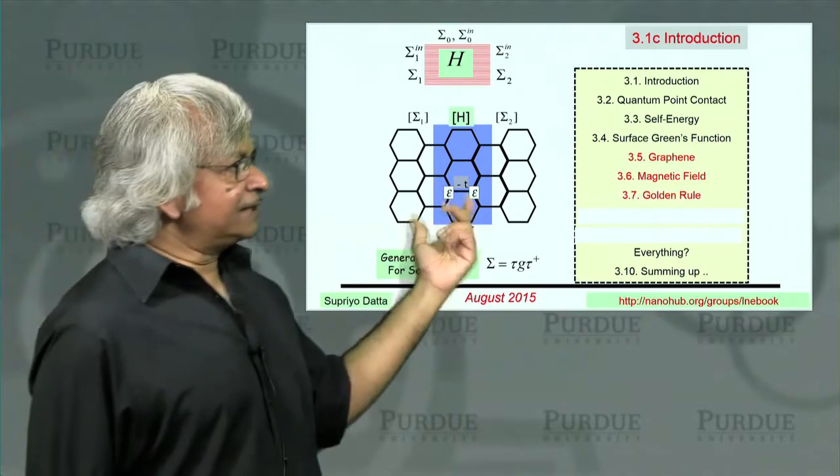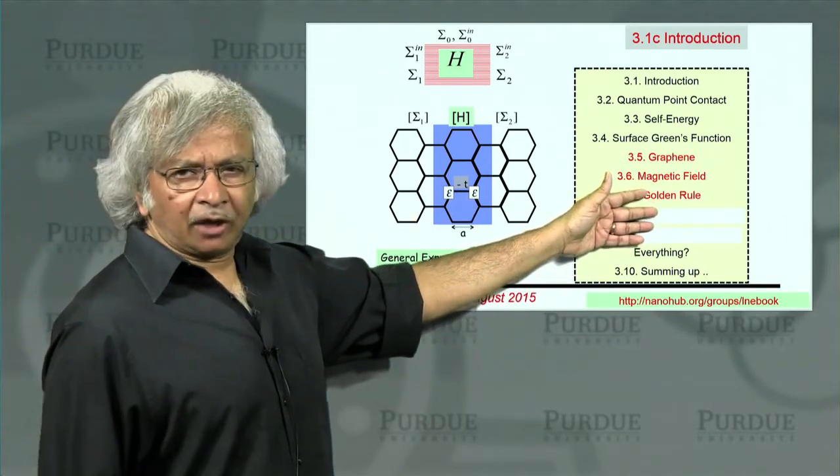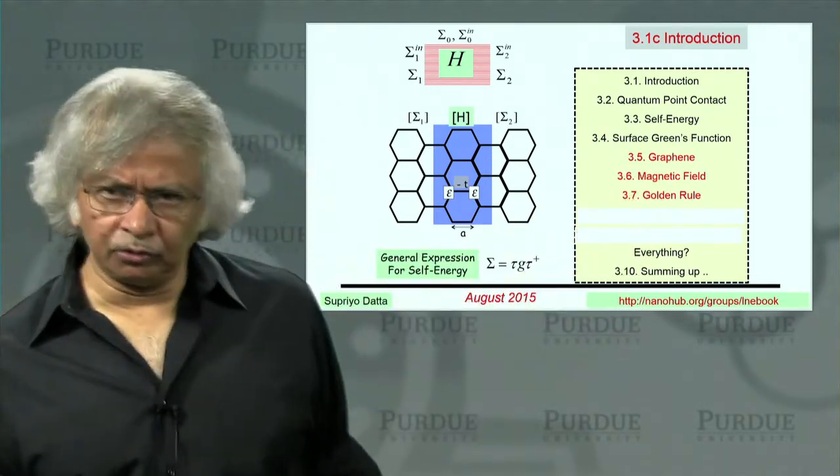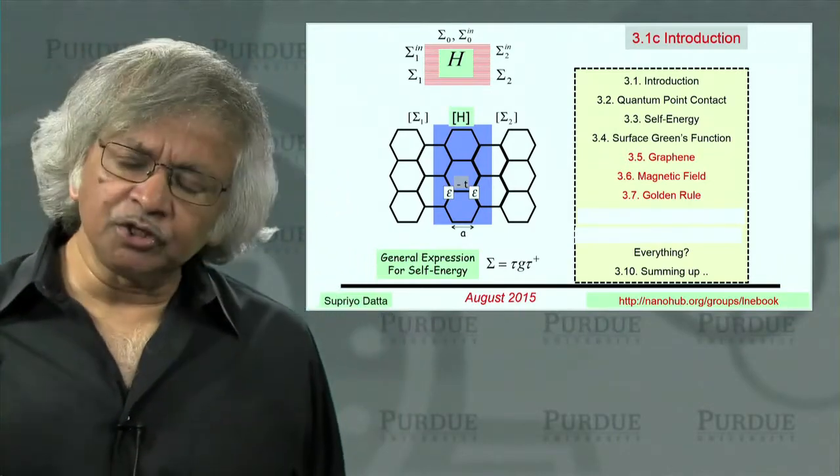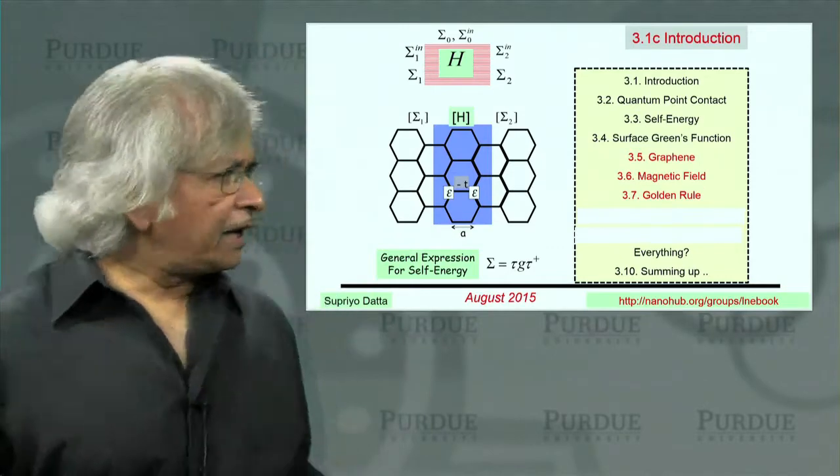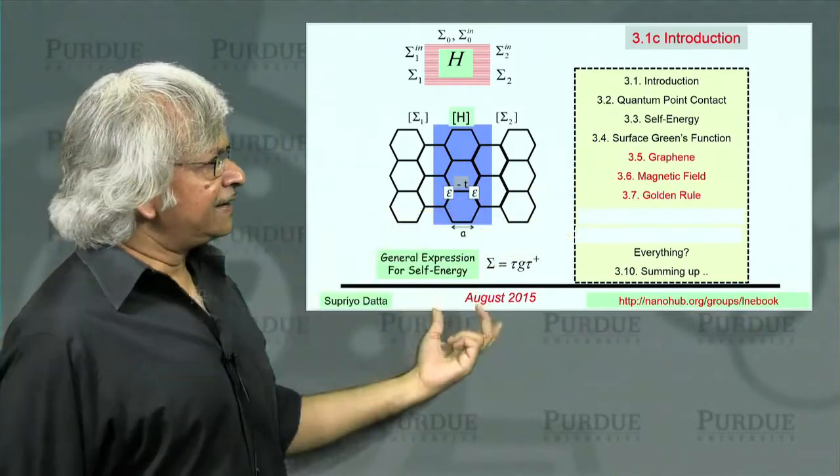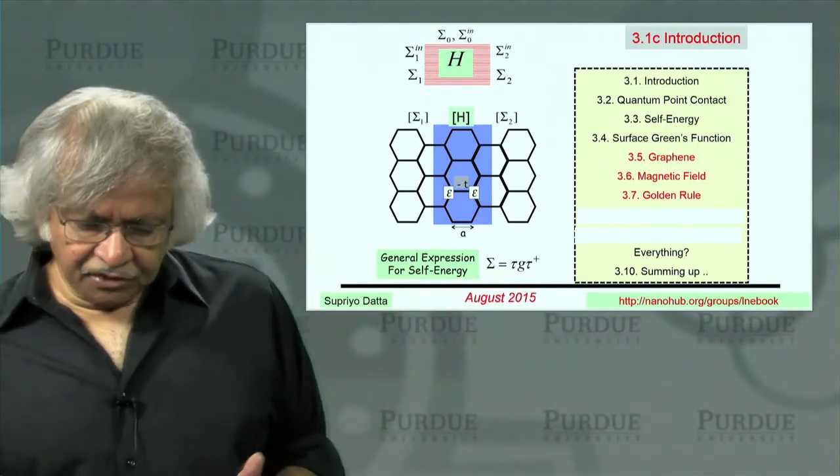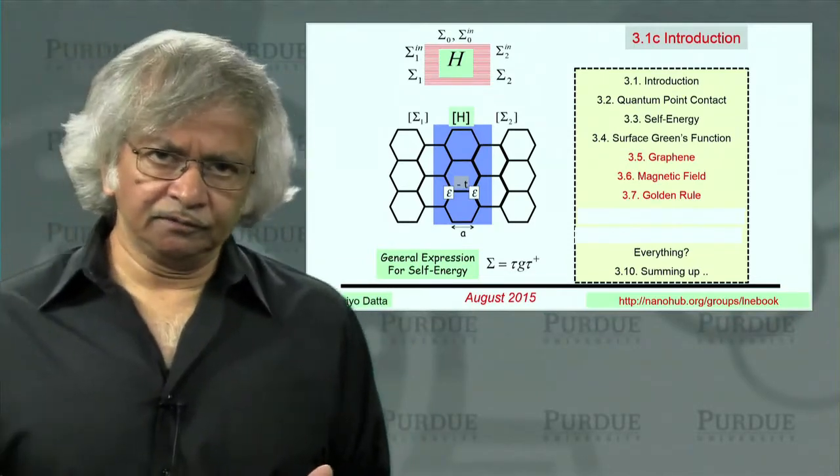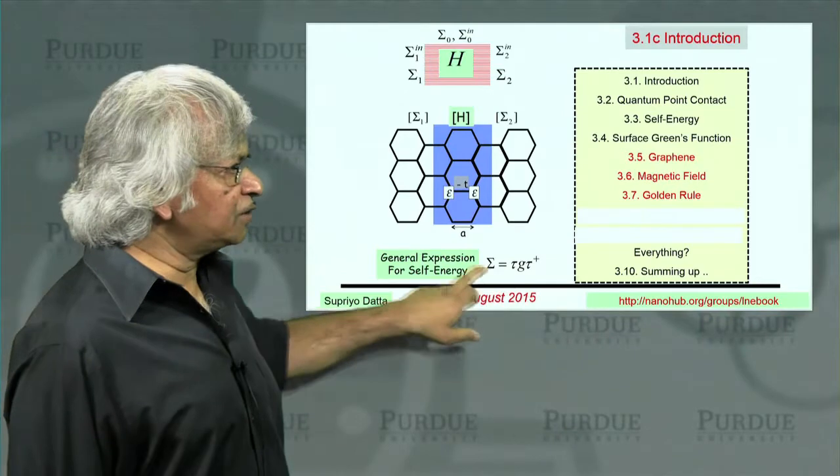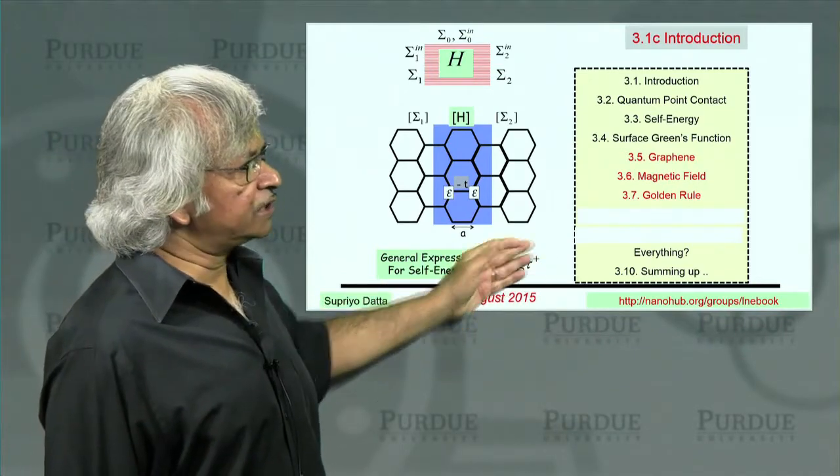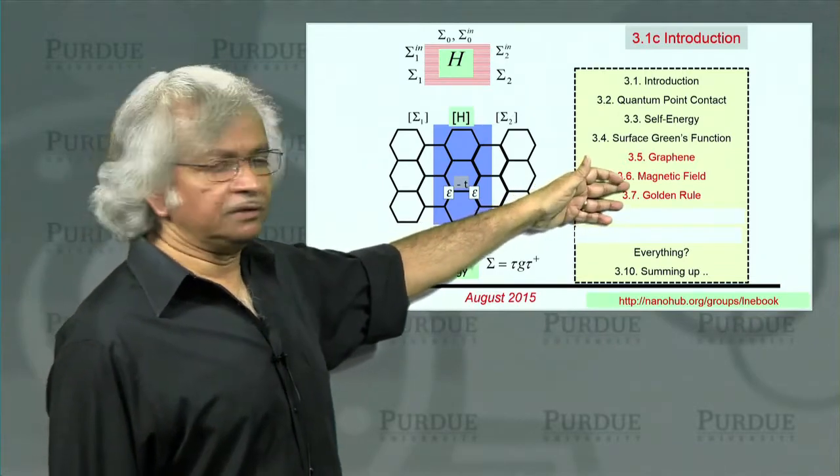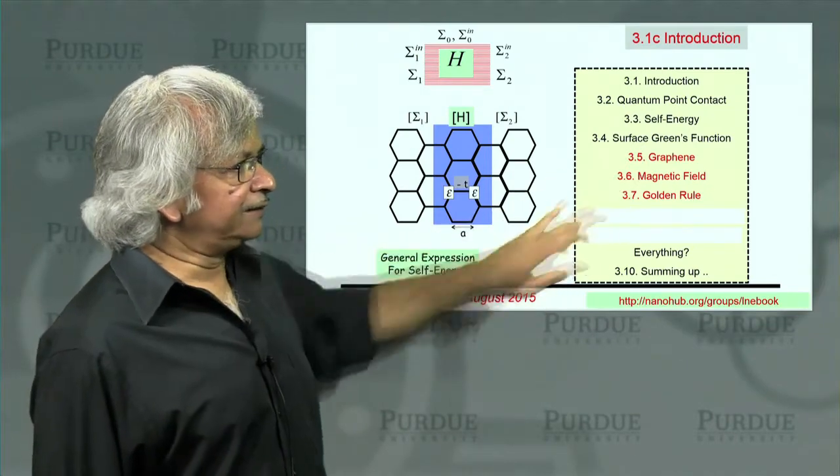Now what we'll do after that is we'll talk about a related topic, that is in many courses on quantum mechanics, you'll hear about this Fermi's golden rule, which is widely used and which is usually derived in a different way. What I'll try to point out in this lecture is that this general expression for self-energy could be viewed as a generalized version of this Fermi's golden rule. And so once you understand this, you could use it to look at many other kinds of problems as well, where normally people use this golden rule. So that's what we'll be doing in this lecture.